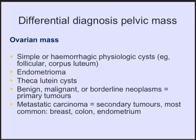Let's focus on the main theme of today: the differential diagnosis of a pelvic mass originating from the ovary. We have first simple or hemorrhagic physiological cysts such as follicular cysts, which arise in the first part of the cycle, and corpus luteum cysts which usually occur after ovulation. Endometrioma is a collection of endometriosis that sheds endometrium inside the ovary and builds up over time. Then benign, malignant or borderline neoplasms primarily arising from the ovary, or metastatic carcinoma as secondary tumors.